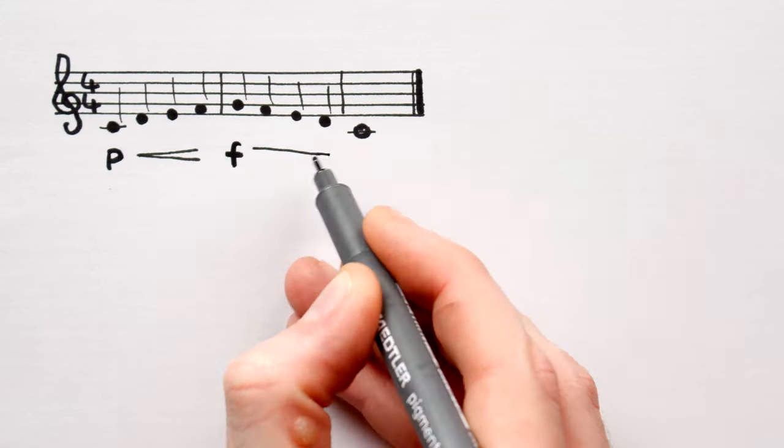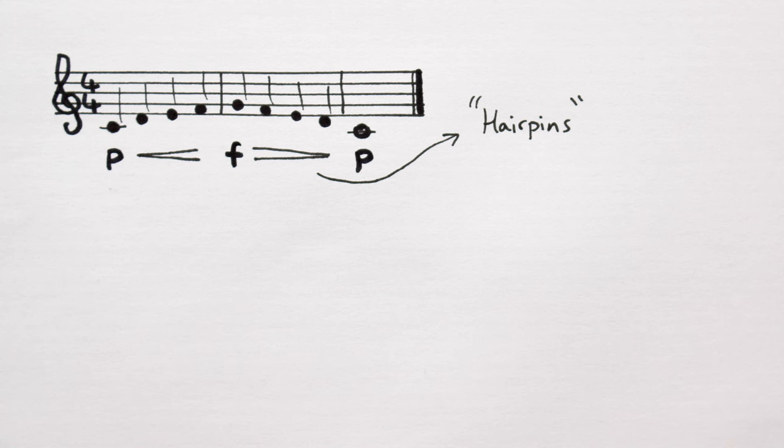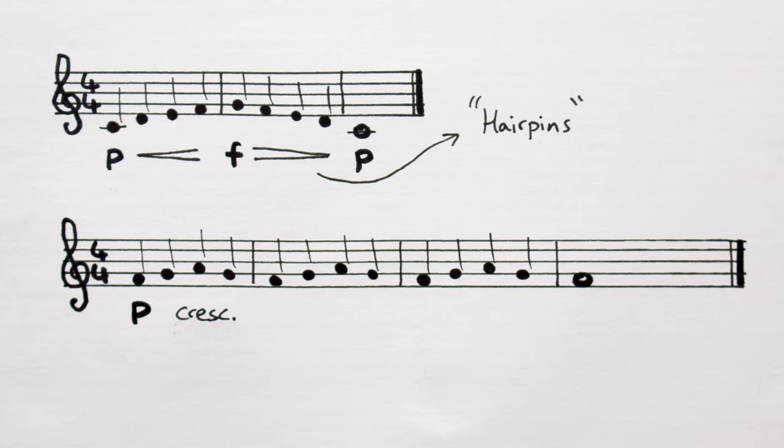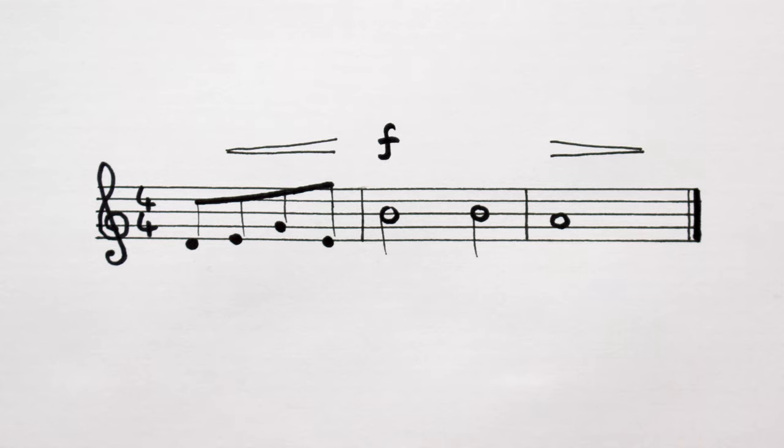However, the hairpins are generally used for dynamic changes over a short period of time, a couple of bars tops, whereas the abbreviations are used for changes over much longer periods. Regardless, all dynamic markings usually go below the stave, unless you're dealing with choral music, in which case they go above the stave.